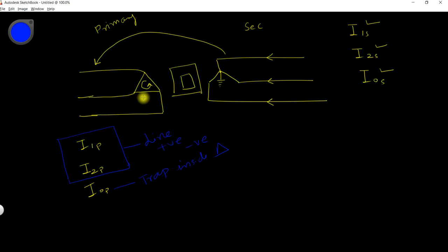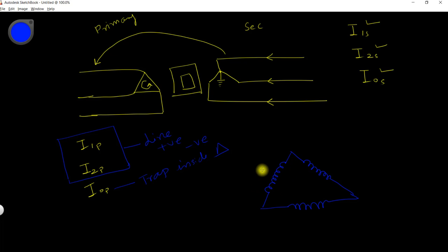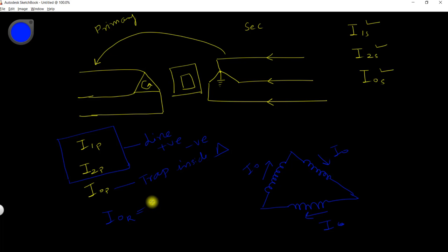Let's prove that the zero sequence component is trapped inside the delta. We draw the delta winding and the zero sequence currents I₀ for each phase. We know that for zero sequence components: I₀_red = I₀_yellow = I₀_blue — all are the same in magnitude and the same in angle.